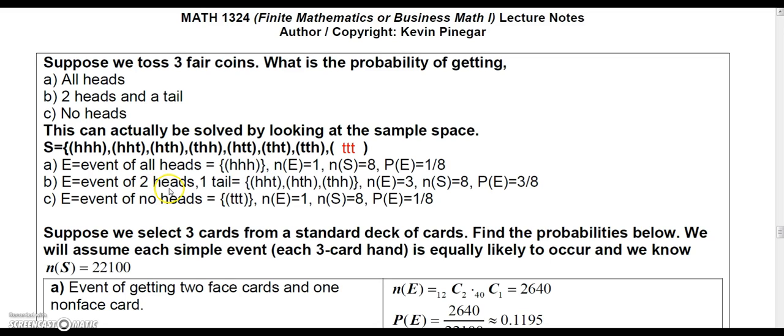Now the event of two heads and one tail, there's three ways that can happen. Head, head, tail; head, tail, head; or tail, head, head. And so that would be three ways out of eight. So that probability would be three eighths.